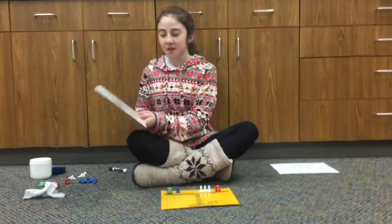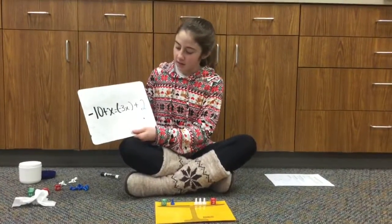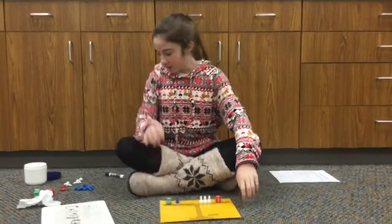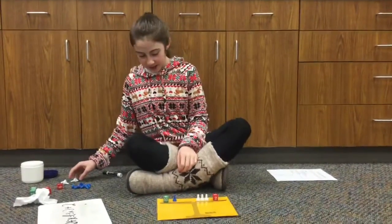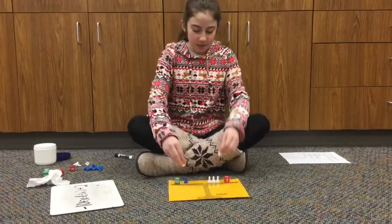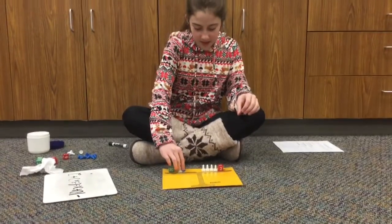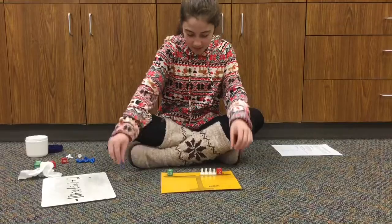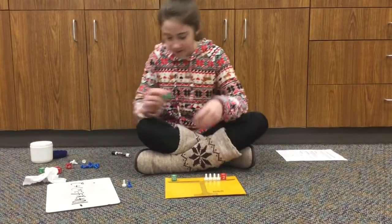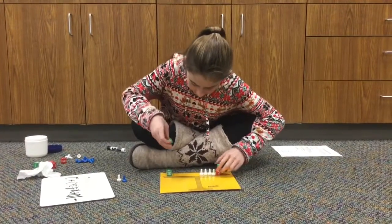The next problem we're going to do is negative 10 plus x equals negative 3x plus 2. The first thing I'm going to do is add a white palm to each side so I can get rid of this blue palm. This equals a pair of zero so I can take it out. Then I'm going to add negative 2 to each side to get rid of this.